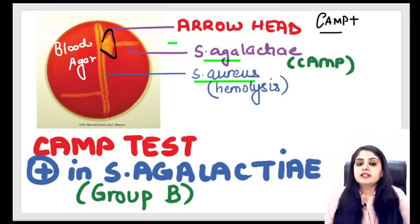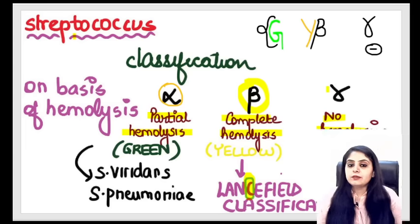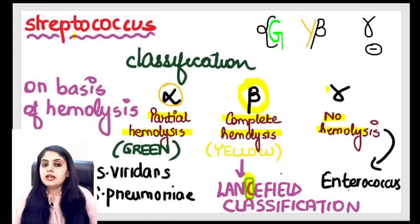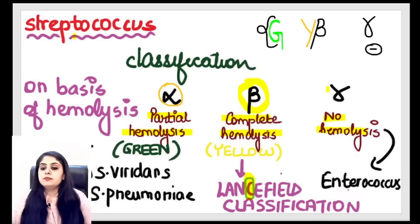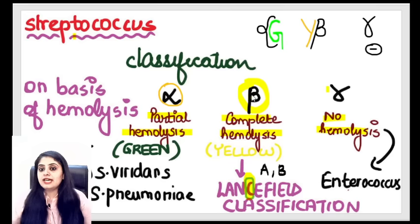Checklist: we have done alpha, beta, and gamma categories. In beta, Lancefield classification: Group A beta-hemolytic Streptococcus — Streptococcus pyogenes — done. Group B beta-hemolytic Streptococcus — Streptococcus agalactiae — done. Now moving on to gamma hemolysis. Gamma means no hemolysis, and under gamma hemolysis is Enterococcus.